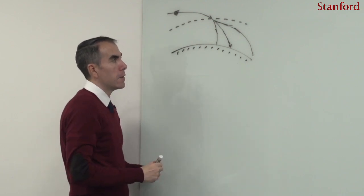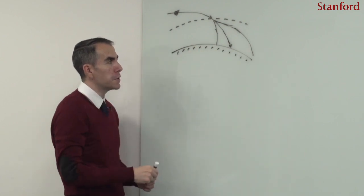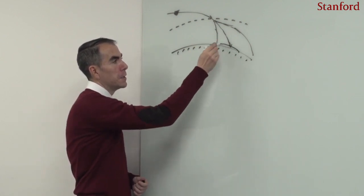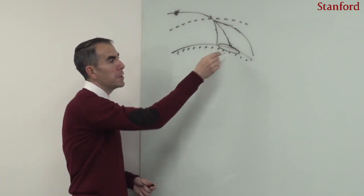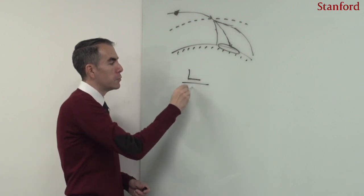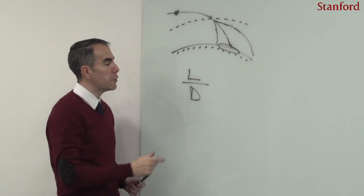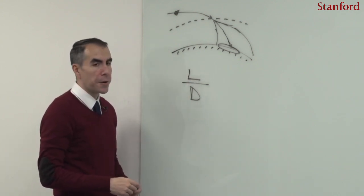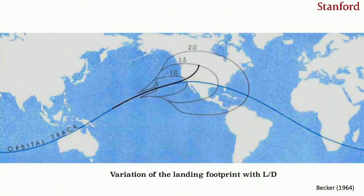At the end of the day, even if one recalculates the re-entry trajectories, in practice one always has an uncertainty in the landing footprint. This landing footprint depends a lot on the lift-to-drag ratio. One can control the size of this landing footprint by controlling the lift-to-drag ratio. On the screen you have one example showing a re-entry trajectory and the size of the landing footprint as a function of the lift-to-drag coefficient.